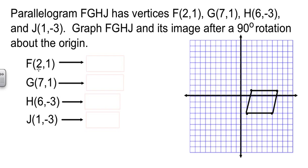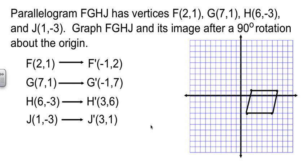Now we're going to use the rule that we just learned on the last slide to get the rotated coordinates. 2, 1 rotates to negative 1, 2. 7, 1 rotates to negative 1, 7. 6, negative 3 rotates to 3, 6. And 1, negative 3 rotates to 3, 1.